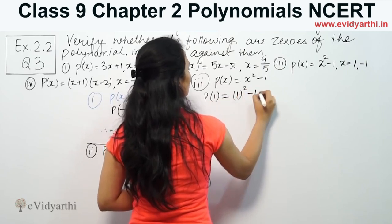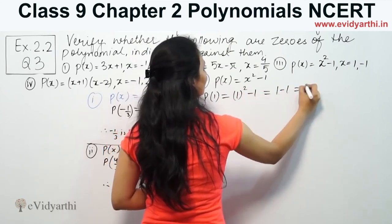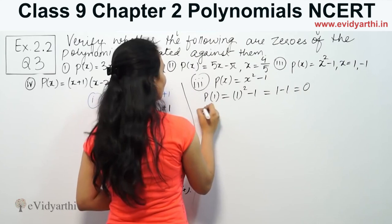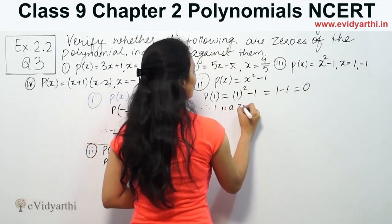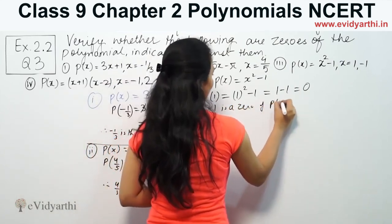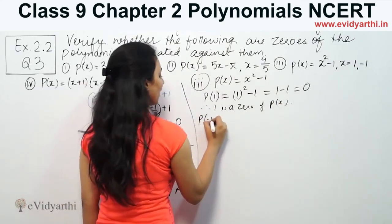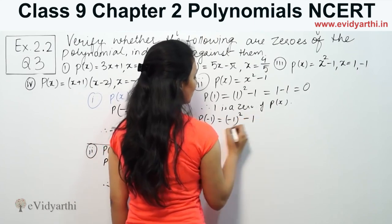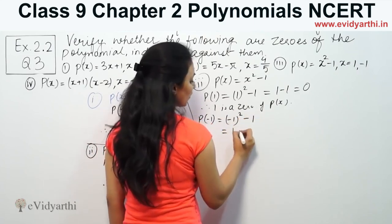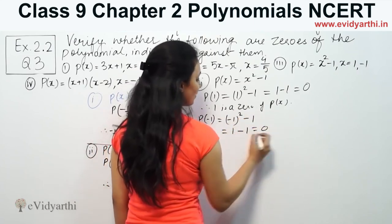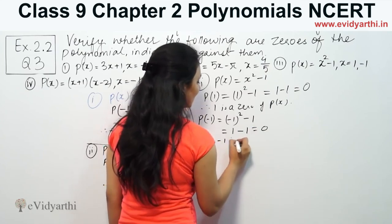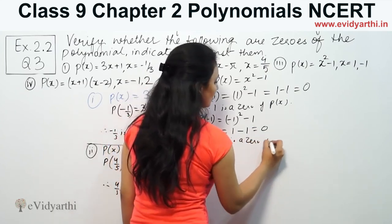1 squared minus 1 will be 1 - 1, which equals 0. Therefore, 1 is a zero of P(x). Now checking -1: (-1)² - 1 = 1 - 1 = 0. Therefore, -1 is also a zero of P(x).